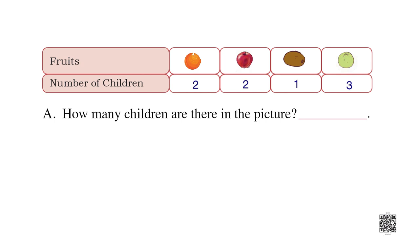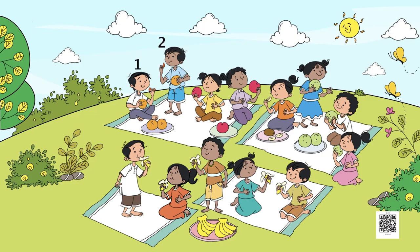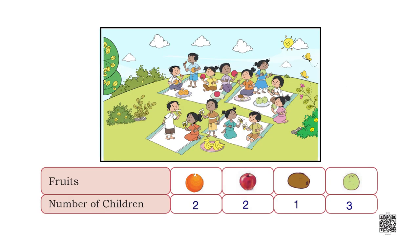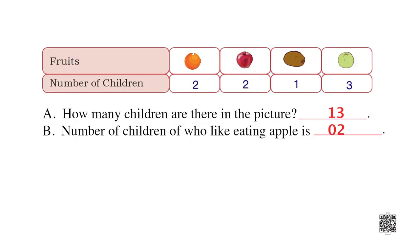Question A: How many children are there in the picture? Let us count: 1, 2, 3, 4, 5, 6, 7, 8, 9, 10, 11, 12, 13. The answer is 13. Question B: The number of children who like apples is? Let us count — only two children are eating apples.